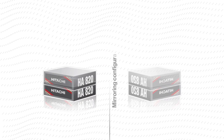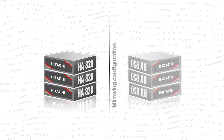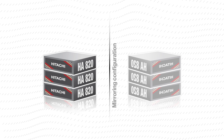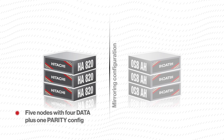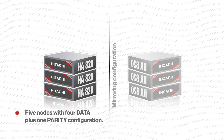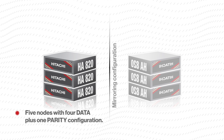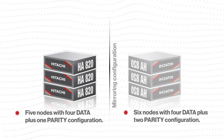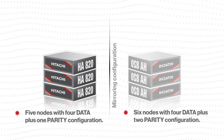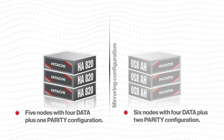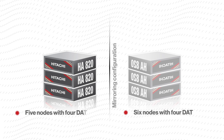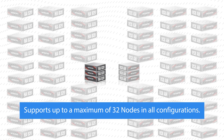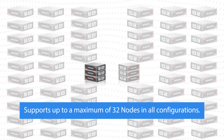VSS Block requires a minimum of 3 nodes with a mirroring configuration. It supports a minimum node count of 5 nodes with 4 data plus 1 parity configuration, or 6 nodes with 4 data plus 2 parity configuration, and supports up to a maximum of 32 nodes in all configurations.